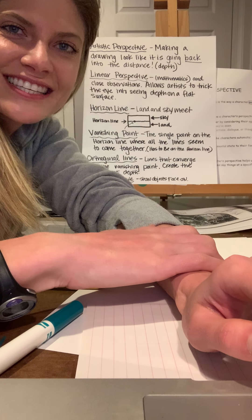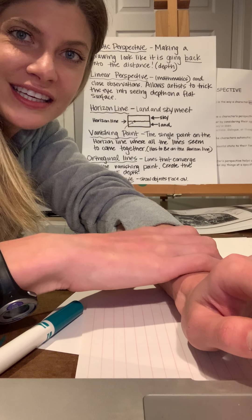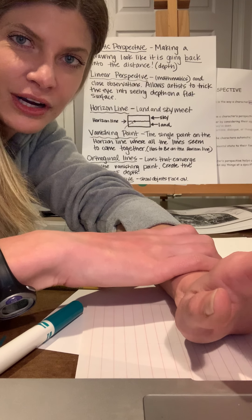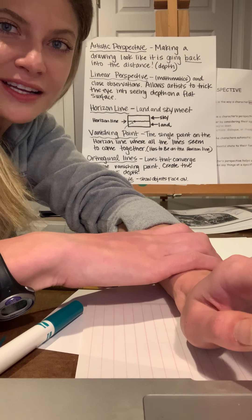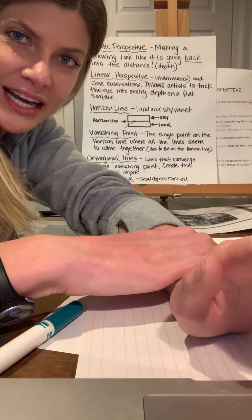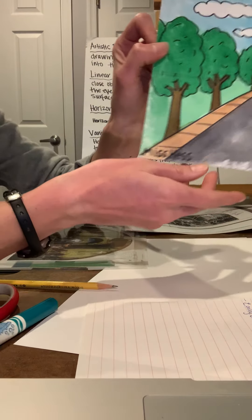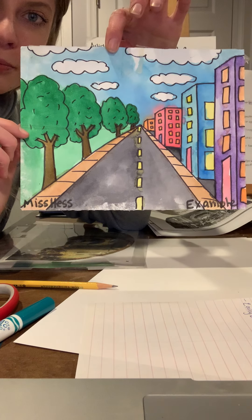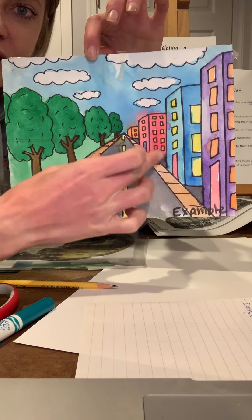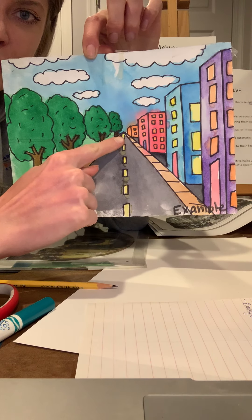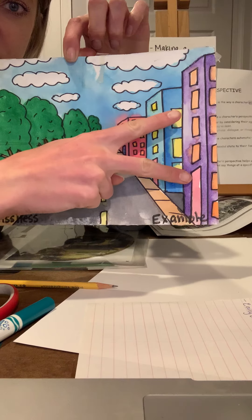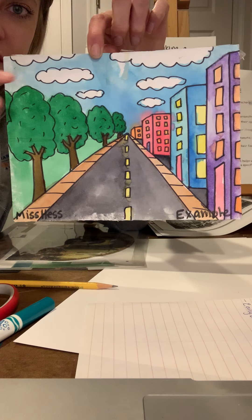Today we are going to learn about perspective drawing. This drawing will be for second, third, and fourth grade — particularly third and fourth. Perspective drawing is when an artist makes the drawing look like it's going back into the distance. For example, in this very basic one-point perspective drawing, the road looks like it's getting smaller and vanishes as it goes back into the distance toward the vanishing point. The trees and buildings also look like they're getting smaller.